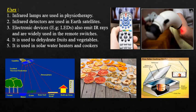Uses of IR radiations: Infrared lamps are used in physiotherapy to relax sore muscles. Infrared detectors are used in Earth satellites. Electronic devices like LEDs also emit IR rays and are widely used in remote switches. IR is used to dehydrate fruits and vegetables, and also in solar water heaters and cookers.